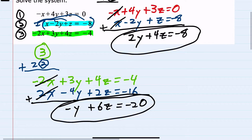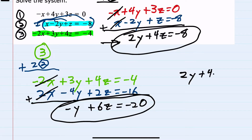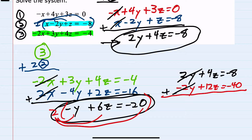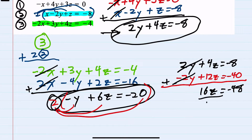These two equations have given me a 2x2 system with only two variables, which makes this easier to solve. I can continue using elimination. I'll take the first equation, 2y plus 4z equals negative 8, and for the second I'm going to multiply by 2 so that the y's will cancel, giving me negative 2y plus 12z equals negative 40. Adding these cancels the y's — that's why I multiplied by 2 — giving me 16z equals negative 48. Dividing both sides by 16, z equals negative 3.